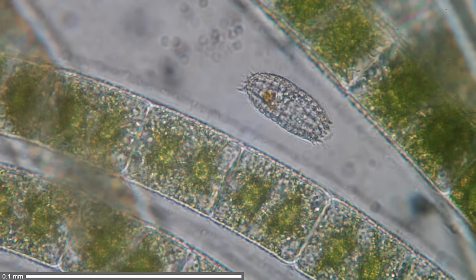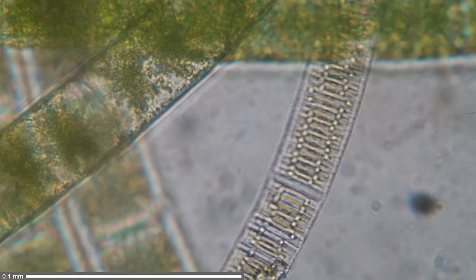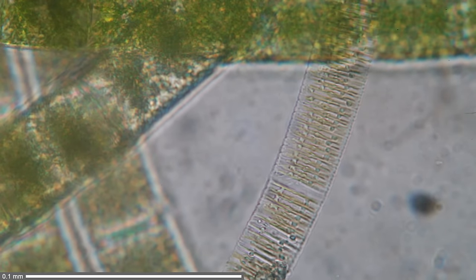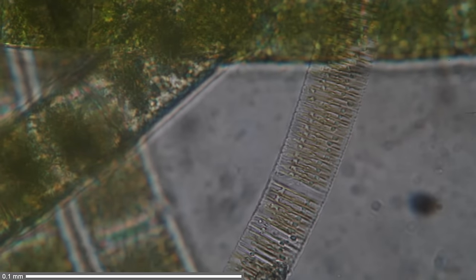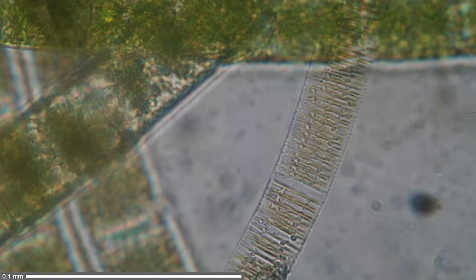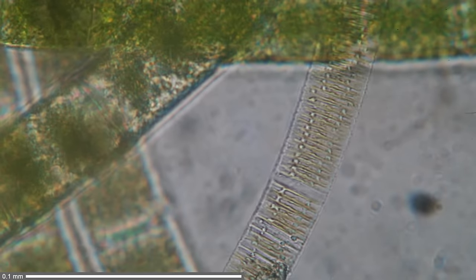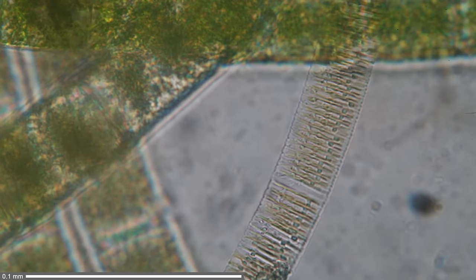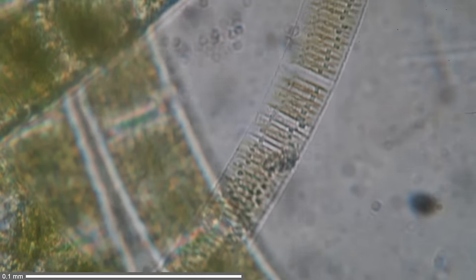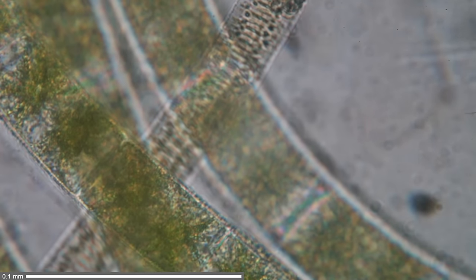This one seems to be diatoms. They have a very regular structure. I was playing around with the iris diaphragm a little bit, that's why the brightness changes. Very regular in structure. They have a silicon shell, which is essentially the same material as glass.